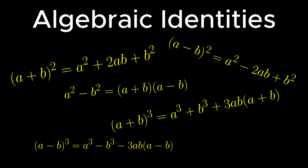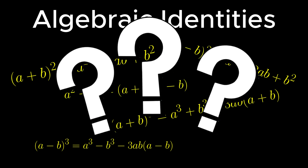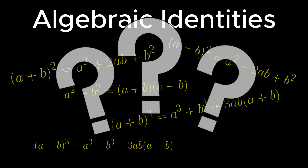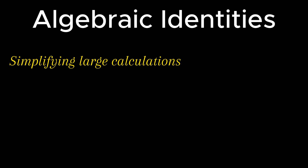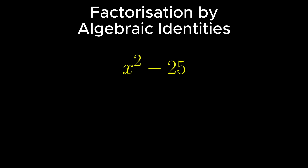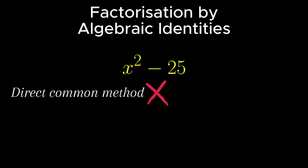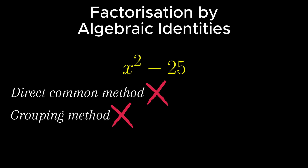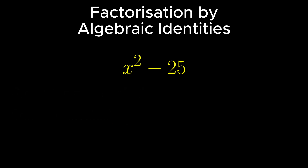Generally, many students ask: what is the use of algebraic identities? Well, these are useful for simplifying large calculations and for factorization. The next method of factorization is by using algebraic identities. The most used identity for factorization is a squared minus b squared, which equals a plus b into a minus b. Consider an expression x squared minus 25. By inspection, it is clear that neither the direct common method nor the grouping method is applicable. Thus, knowledge of algebraic identities comes into play.